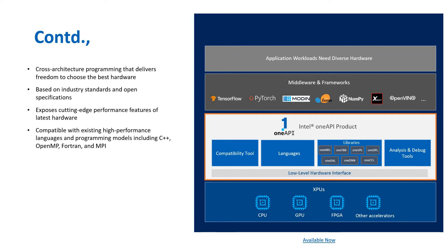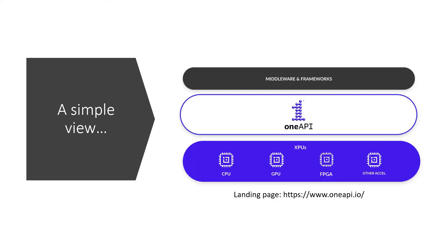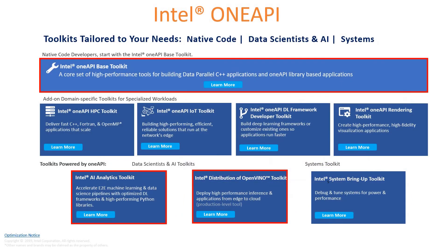Importantly, it is compatible with existing high-performance languages which include C++, OpenMP, Fortran and MPI. It's going to be very compatible with whatever we already know, so it's going to be easy for us to learn and work on. The simple view shows that OneAPI acts as the interface between the hardware and the middleware and frameworks. It's easy to learn, fantastic to understand, and powerful to use. The landing page is oneapi.io — please visit that page as it has a plethora of information.